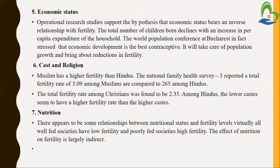Then caste and religion — in some castes and religions there are misbeliefs related to the birth of babies. Muslims have a higher fertility rate than Hindus. The National Family Health Survey reported a total fertility rate of 3.09 among Muslims compared to 2.65 among Hindus. The total fertility rate among Christians was found to be 2.35. In lower castes the fertility rate is also higher than upper classes. So caste and religion directly or indirectly affect the fertility rate.